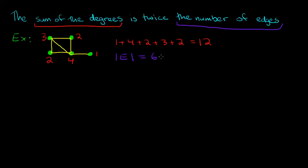So this particular graph has 6 edges. So our example works. We can see that the number of edges times 2 would give us exactly the sum of the degrees. So now let's write down our theorem.